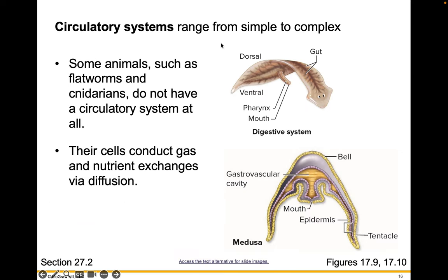Circulatory systems range from simple to complex. Some animals, such as flatworms and cnidarians, don't have a circulatory system at all — their cells conduct gas and nutrient exchanges by diffusion. These organisms are usually flat; they have a large surface area but a relatively small volume.